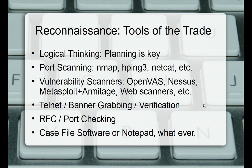Recon tools of the trade: logical thinking - planning is key. You need to have a good plan in order to do a successful audit. For port scanning we're going to be using Nmap primarily. Hping3 we'll get into in the advanced series for firewall IDS/IPS evasion techniques. Netcat - we'll do a brief overview. Really Nmap is going to be our go-to for port scanning and service discovery. For vulnerability scanners there's a few - OpenVAS, of course. There is Nessus, but we won't be using that. We'll touch a little on Metasploit and Armitage today. We're not going to get into web scanners - that's more of an external audit. We'll use telnet banner grabbing for verification of services, and RFC port checking.